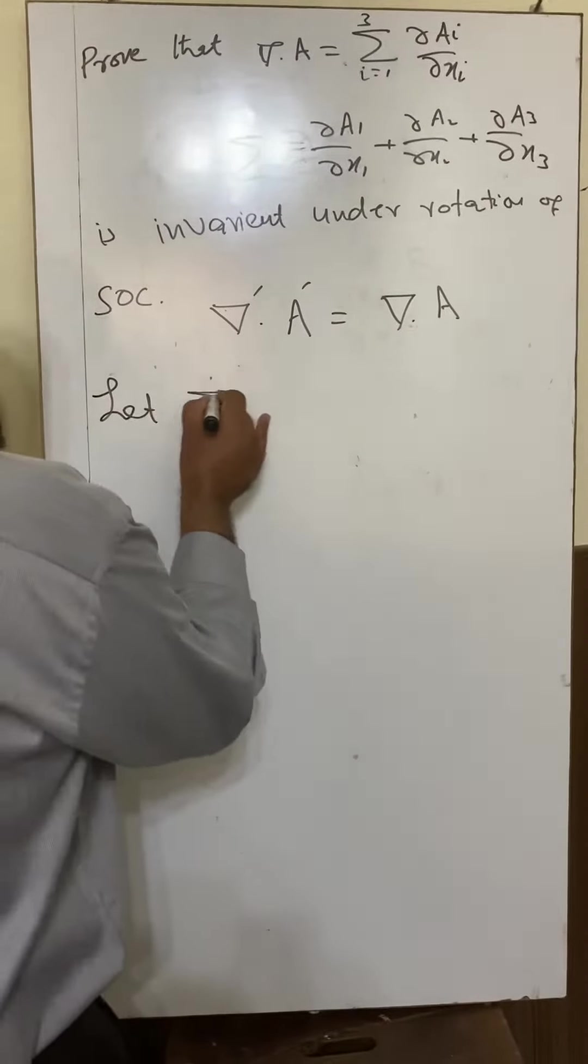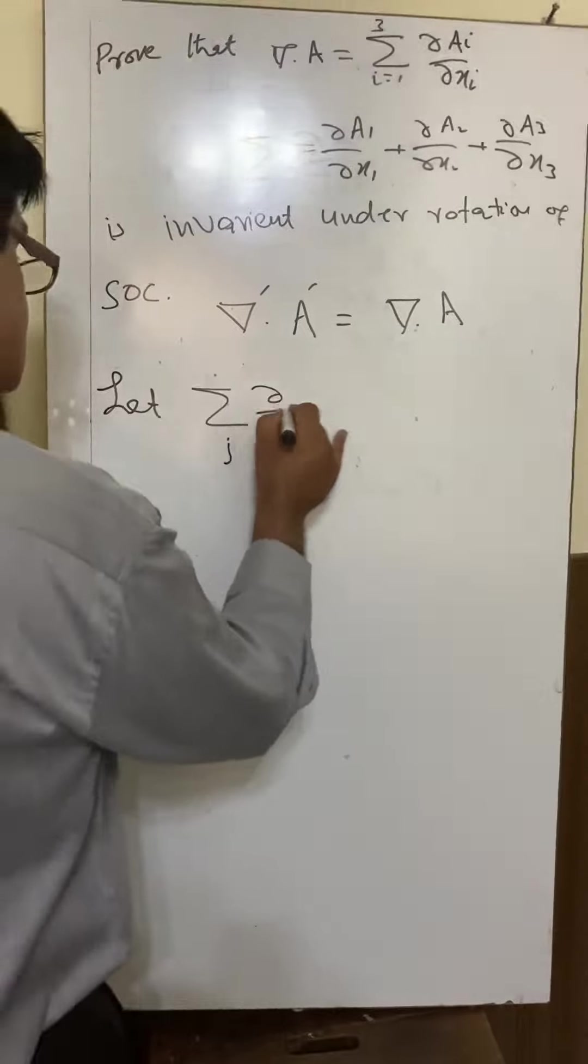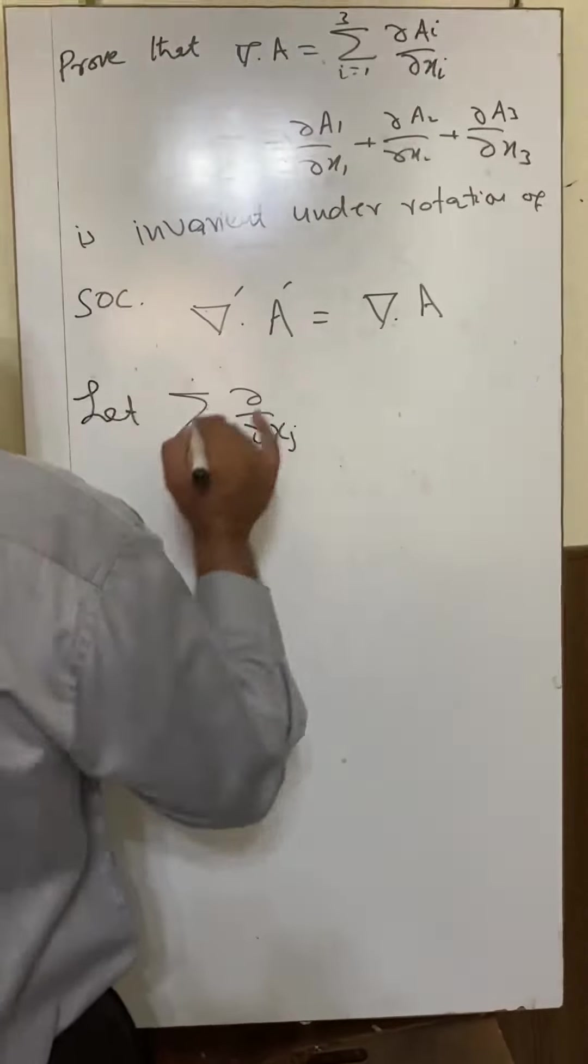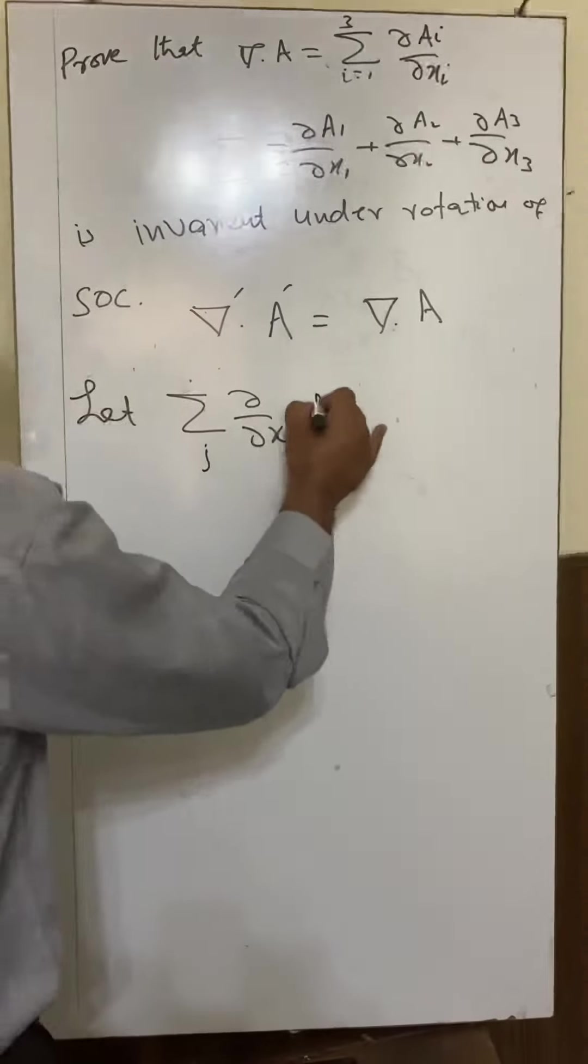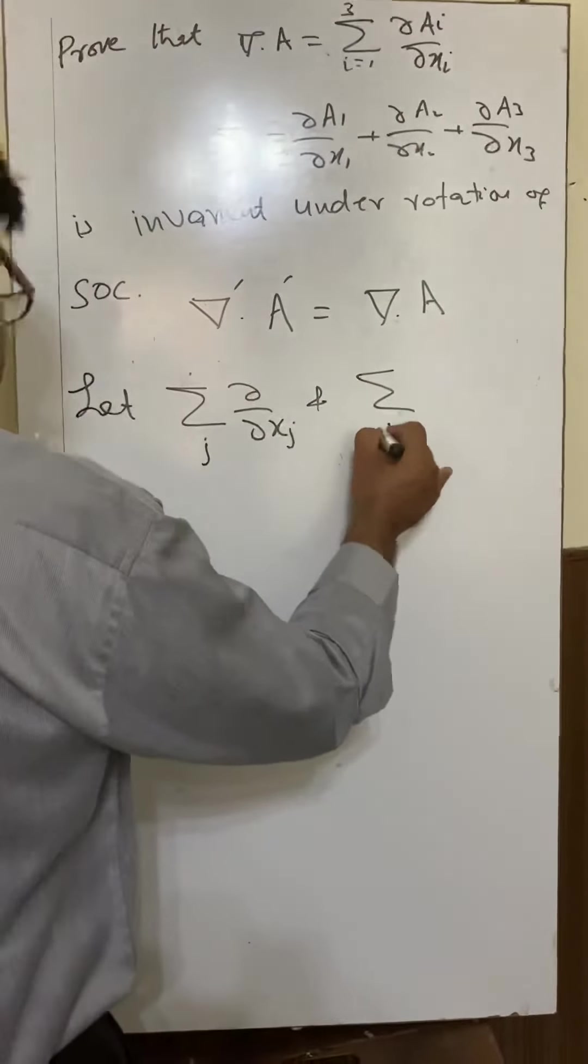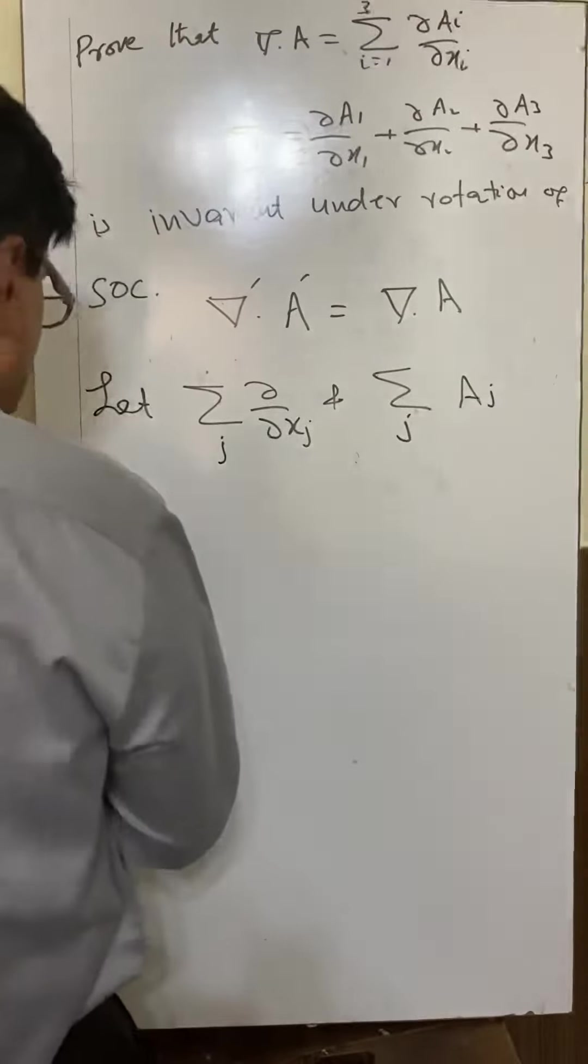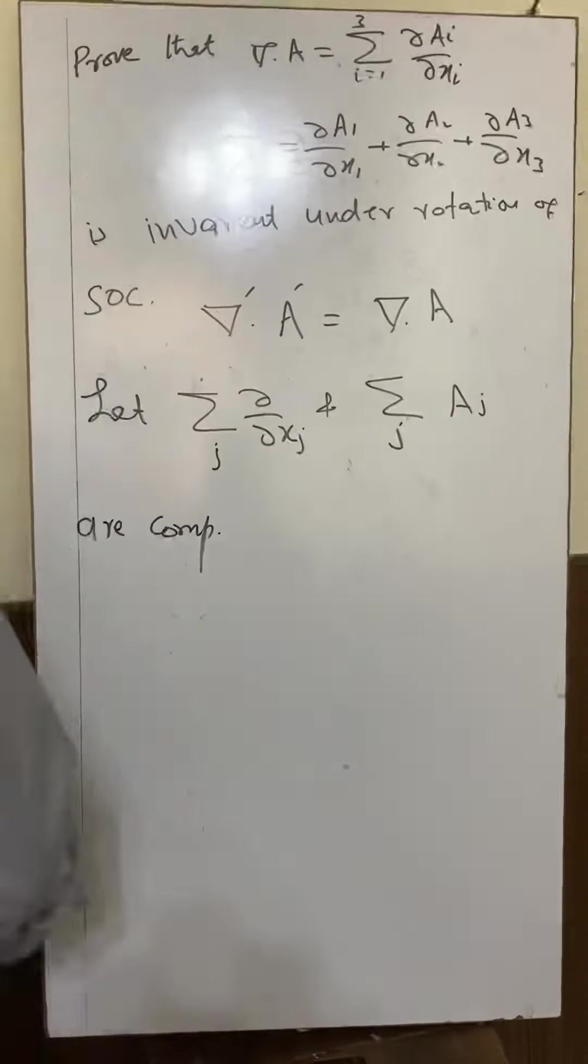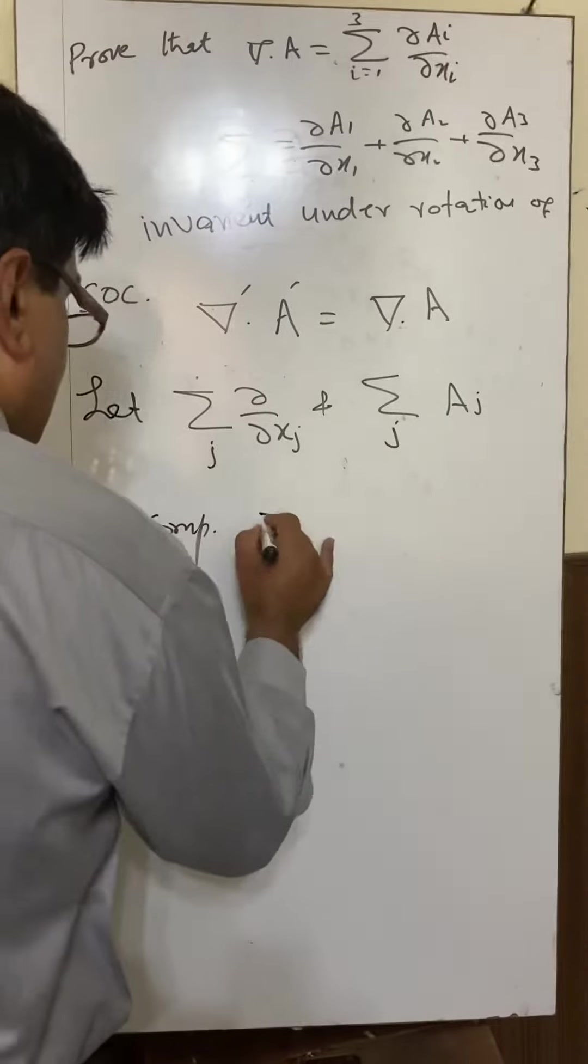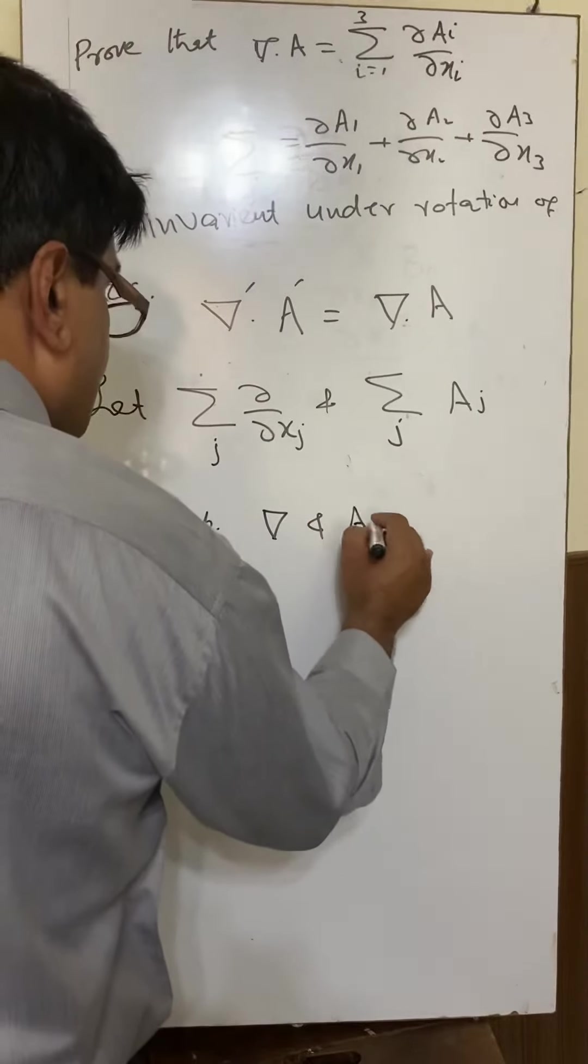summation j partial over partial x_j and summation j A_j are the components of del and A before rotation of the coordinate system,